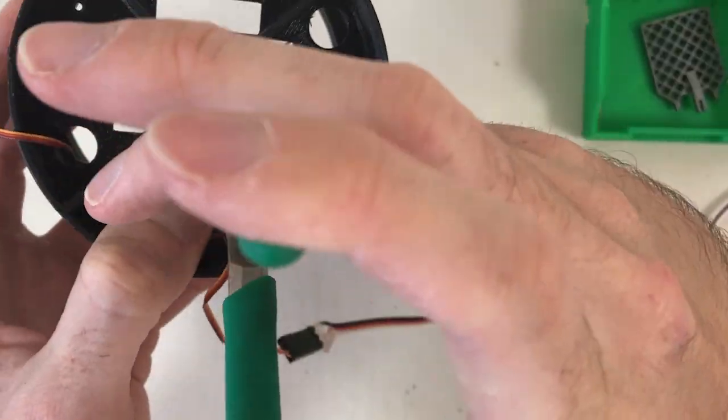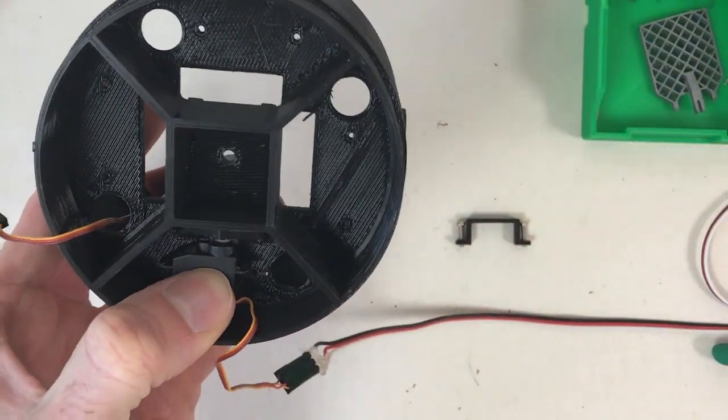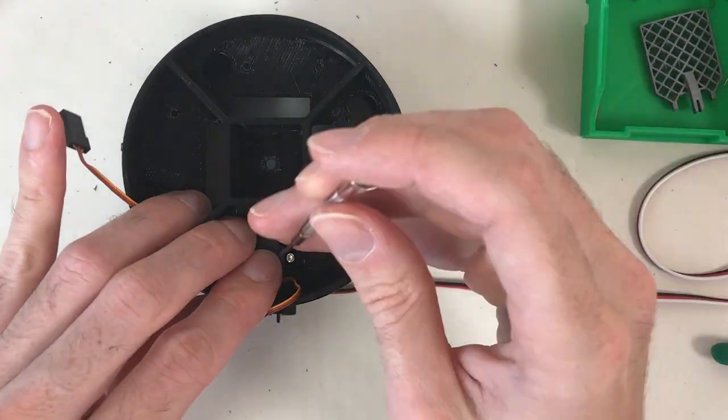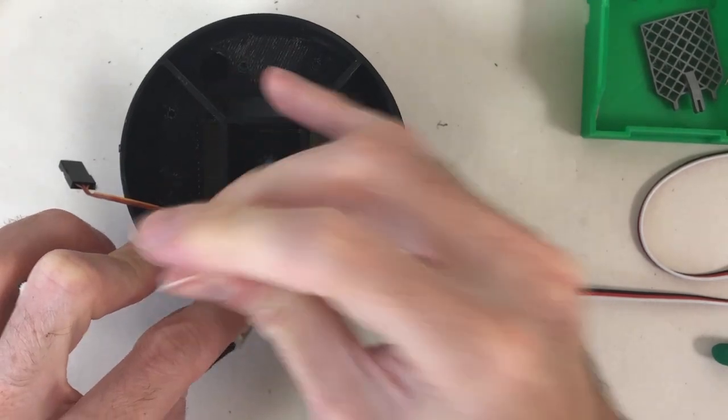Before bolting the servo motor, I connect the servo motor to the control board, and I make sure that the mechanism works as expected. Finally, I secure the servo motor using a bracket.